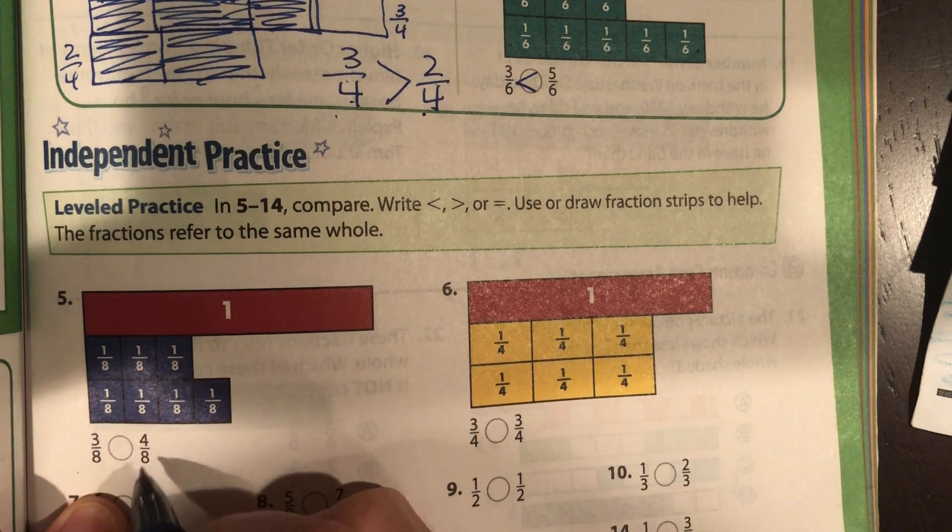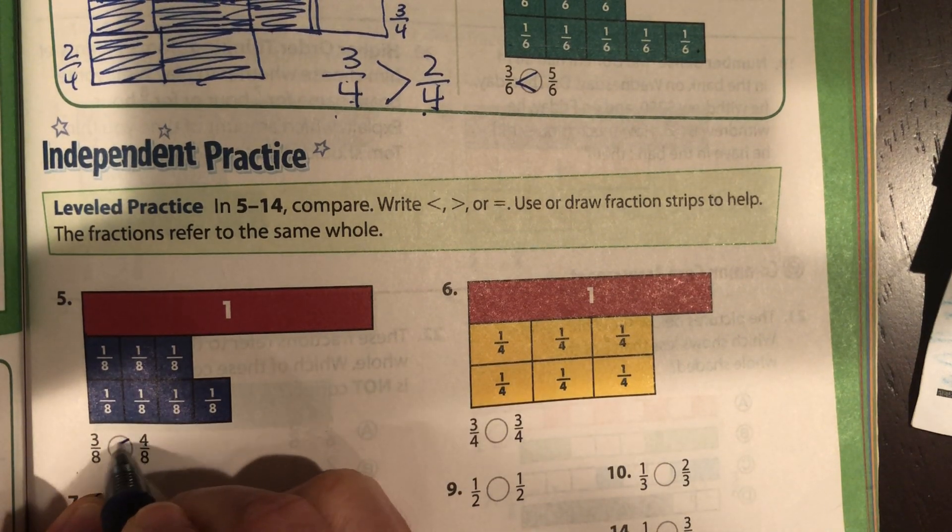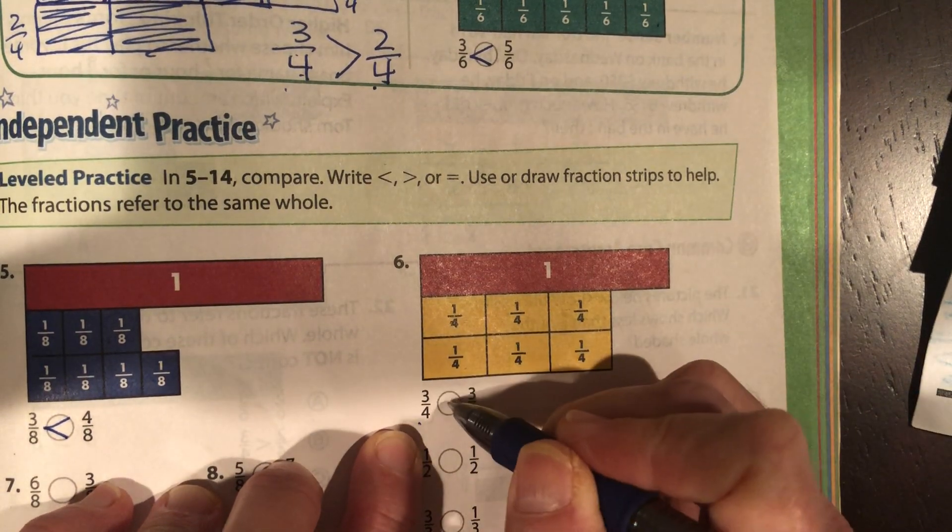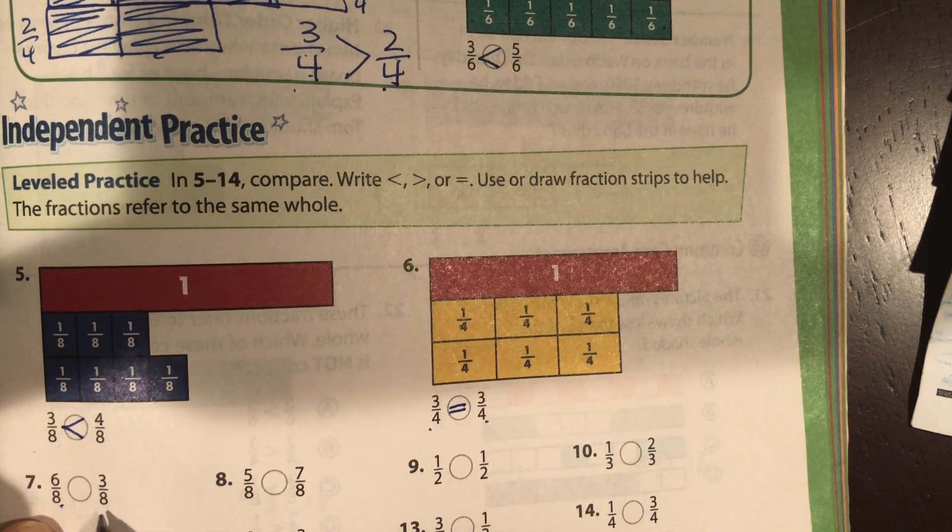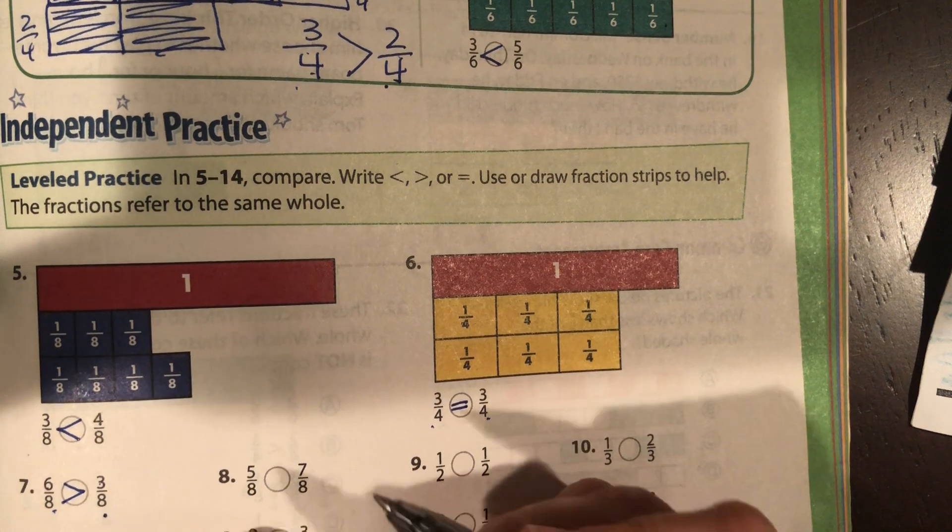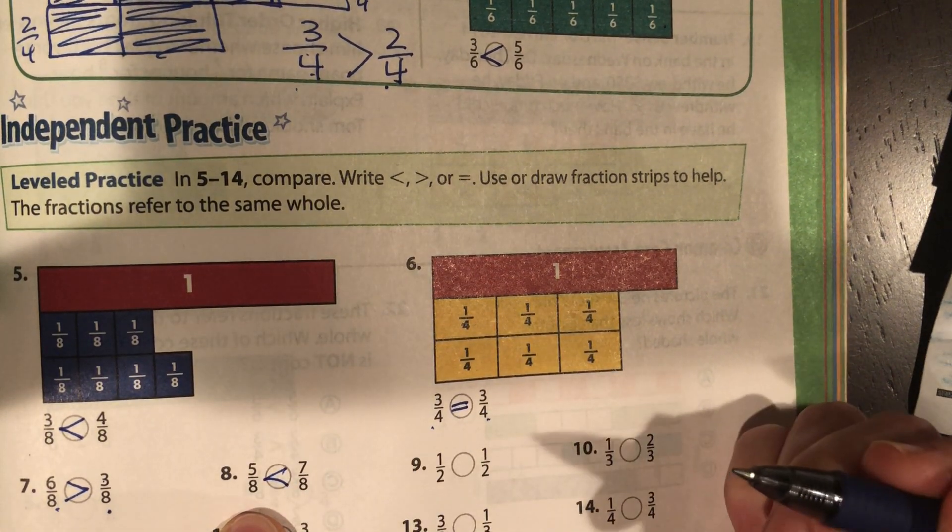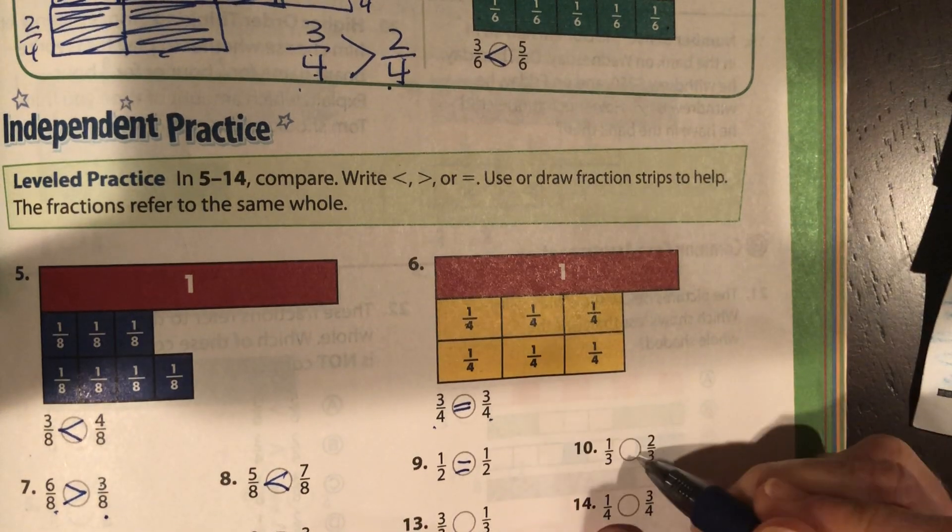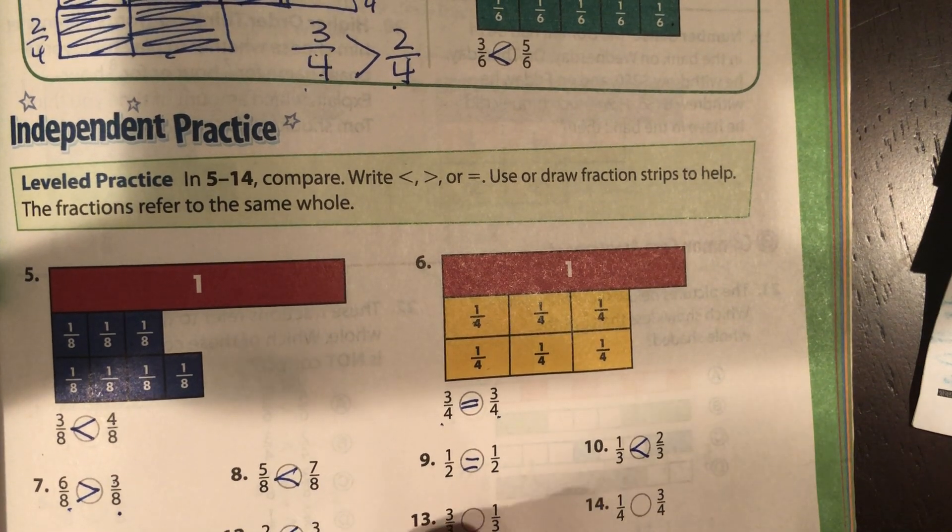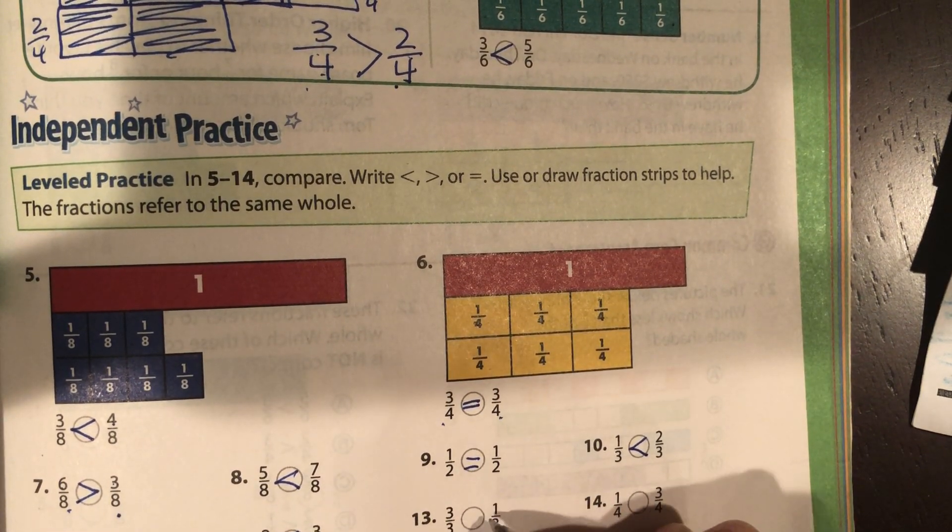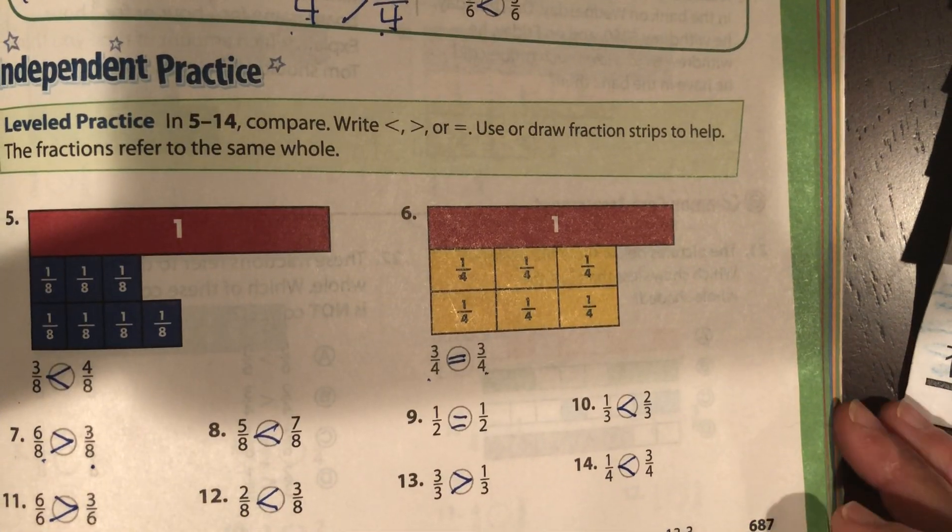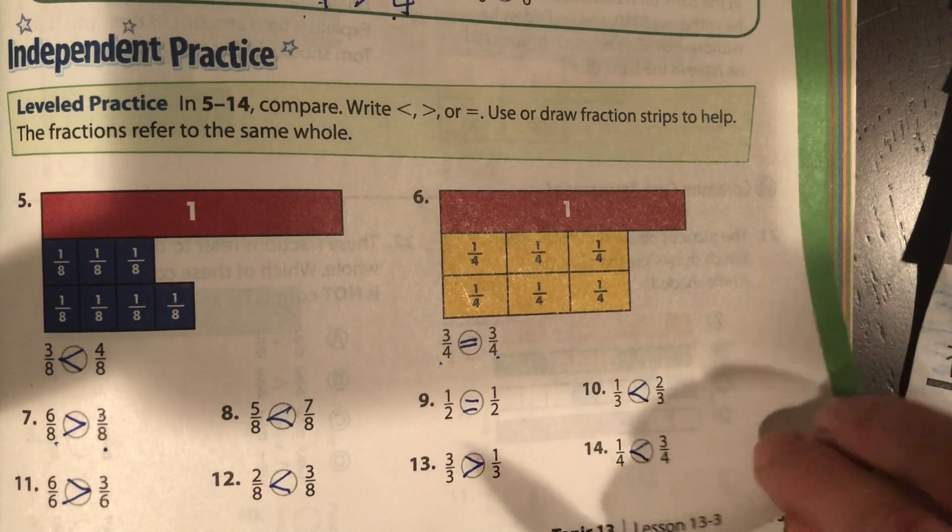Three-eighths compared to four-eighths. Obviously four is greater than three. Three-fourths compared to three-fourths, they're exactly the same, equal. Eighths are the same, so six is greater than three. Six-eighths is greater than three-eighths. Seven-eighths is greater than five-eighths. Those are equal. Two-thirds is greater than one-third. Six-sixths is greater than three-sixths. And greater than. Pause if you need to. I'm going to flip to the back.